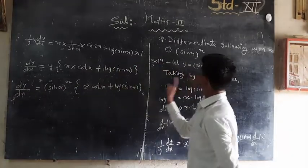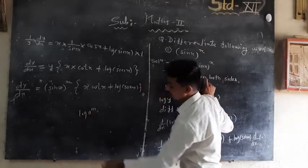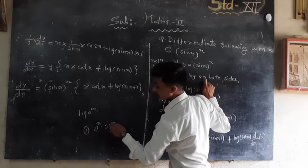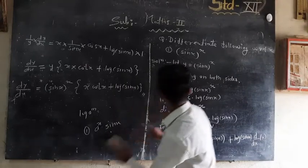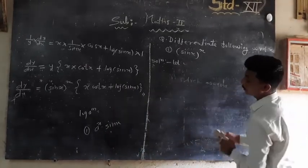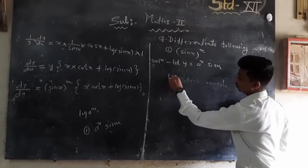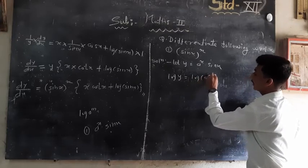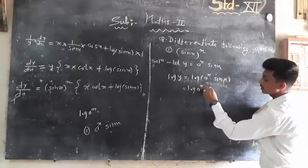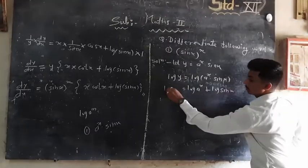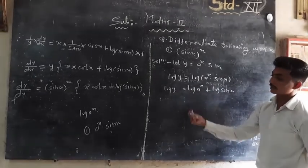Now, if the function is in the form of a product — say y = a^x · sin(x) — we take log of both sides: log(y) = log(a^x · sin x) = log(a^x) + log(sin x). So log(y) = x·log(a) + log(sin x). Then we differentiate using the standard formulae to get the final answer.